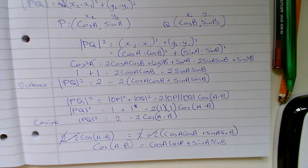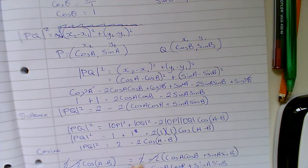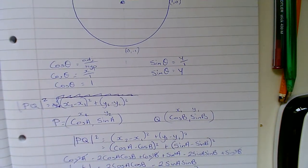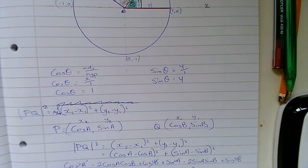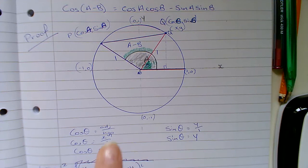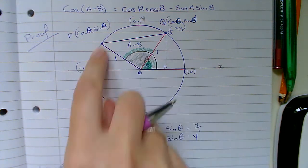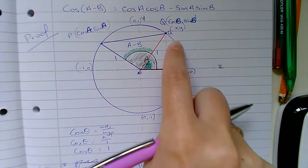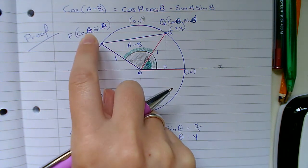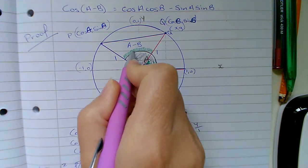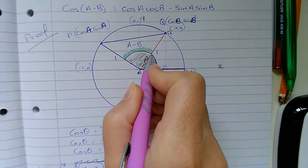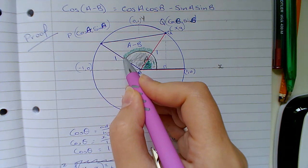And that's the end of the proof. This is one of the most important proofs on the course — it comes up so often, and everything else stems from this. The key things to take away: it's based on the unit circle, you draw the diagram showing points P and Q with angles a and b, and then you use the distance formula and the cosine rule to get two expressions for PQ², set them equal to each other, and simplify.